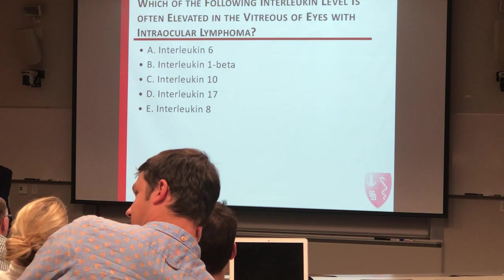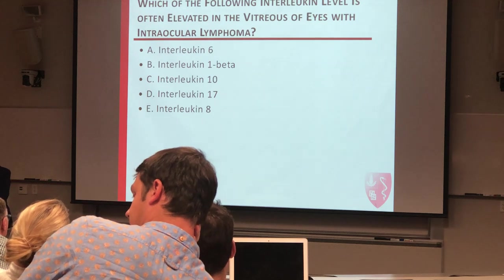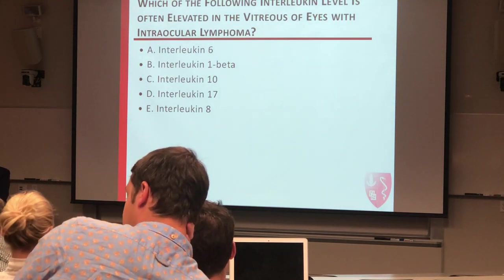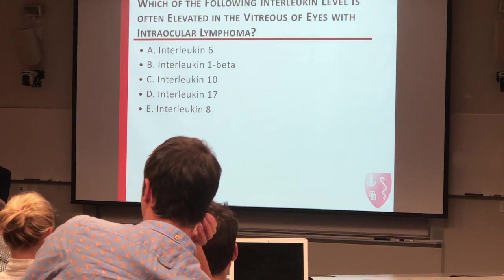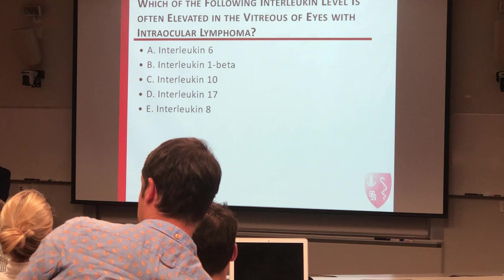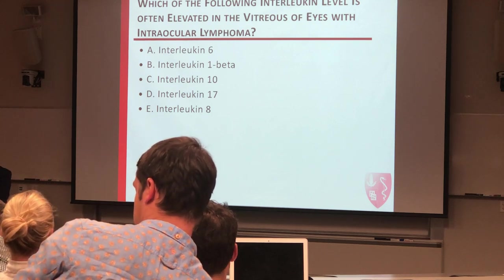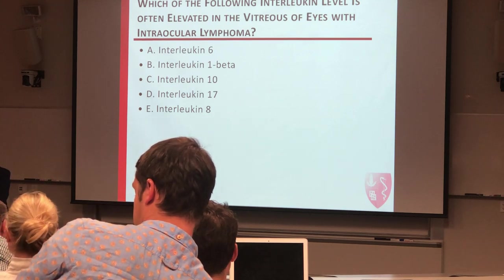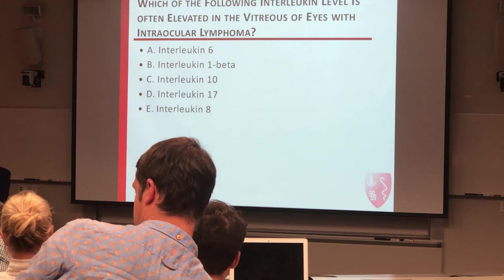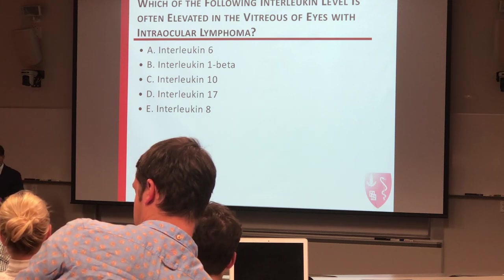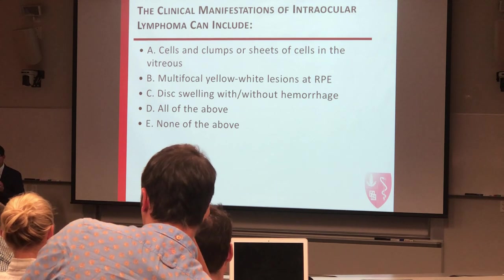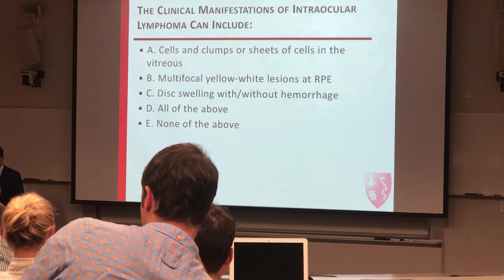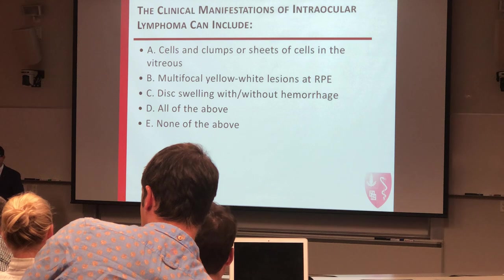Let's get two questions here. Which of the following interleukin levels is often elevated in the vitreous fluid with a vitreoretinal lymphoma? You have five choices, and 20% chance. The choices are IL-6, IL-1 beta, IL-10, IL-17, or IL-8. We can skip that and come back to it at the end. How about this one: The clinical manifestations of intraocular lymphoma can include clumps or sheets of cells, multifocal yellow-white lesions, disc swelling, all of the above, or none of the above.